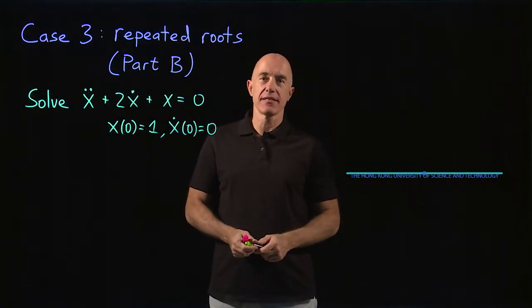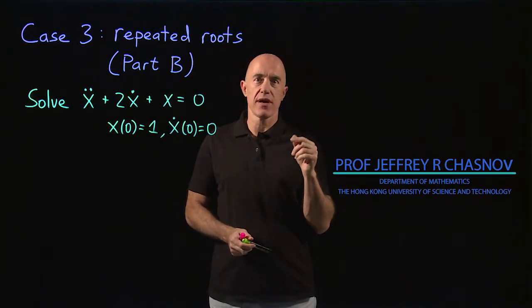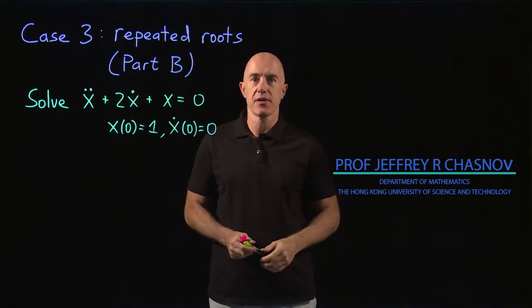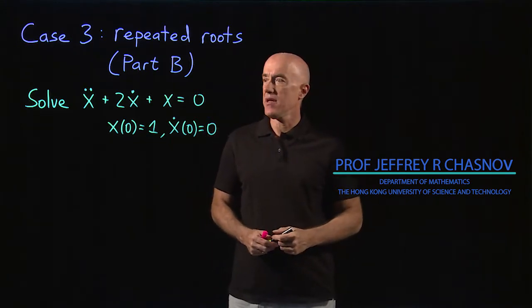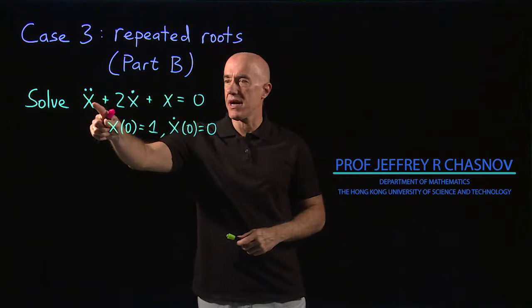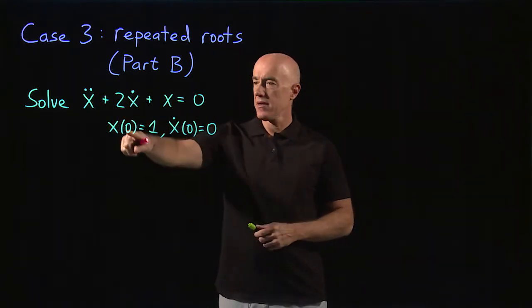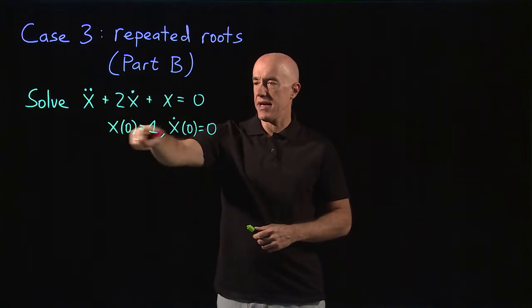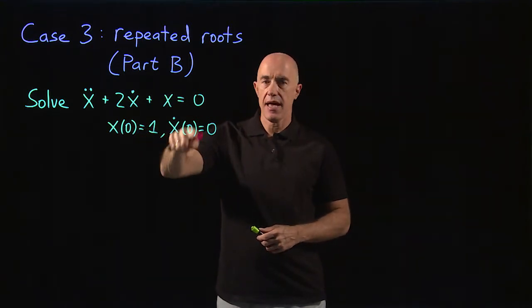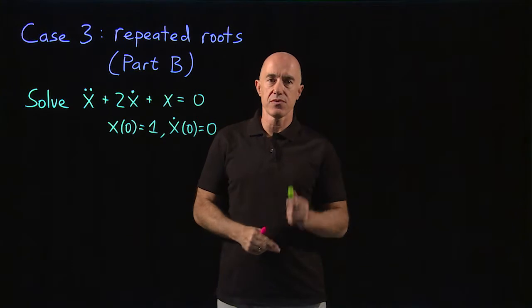Let's work an example of the case when there are repeated roots of the characteristic equation. We're going to solve x double dot plus 2x dot plus x equals 0, with initial conditions x of 0 equals 1 and x dot of 0 equals 0.